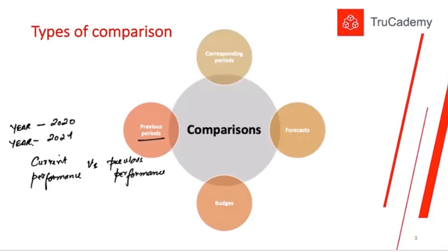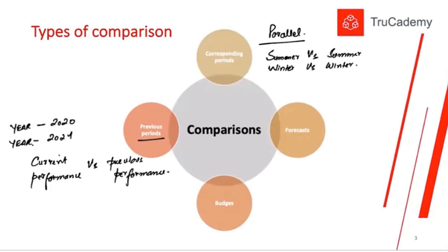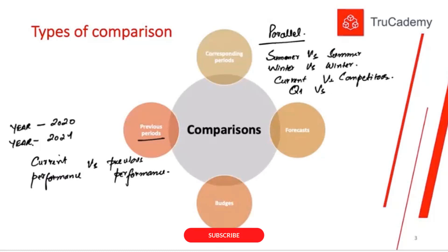The second type is corresponding periods, also called parallel comparisons. For example, how was our result in one summer versus another summer, or one winter season versus a second winter season. Most importantly, how is our current performance versus our competitors — if data is available. Comparing quarter one of this year versus the current quarter also falls under corresponding or parallel period comparisons.